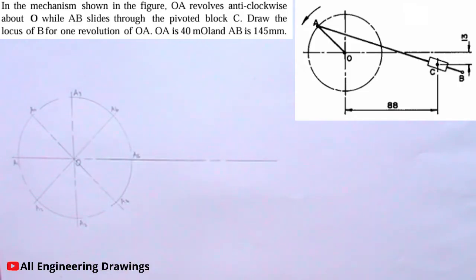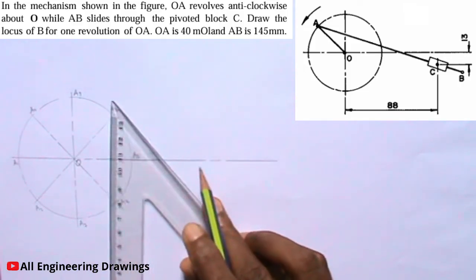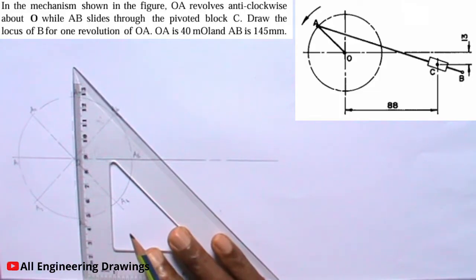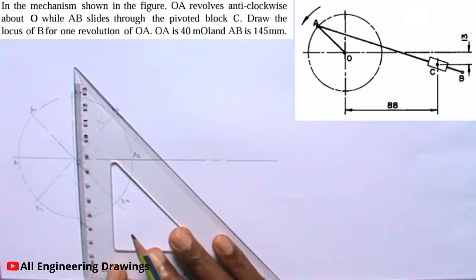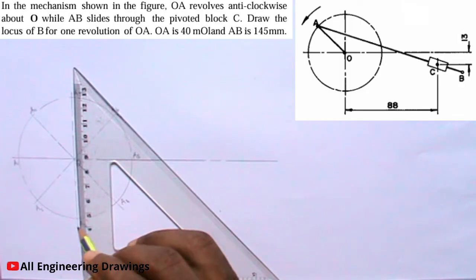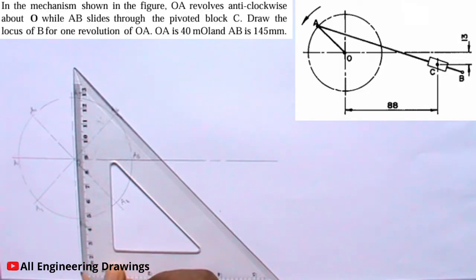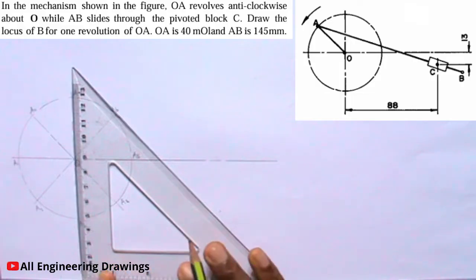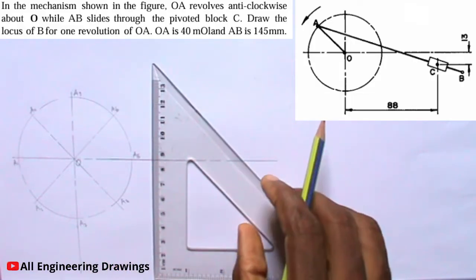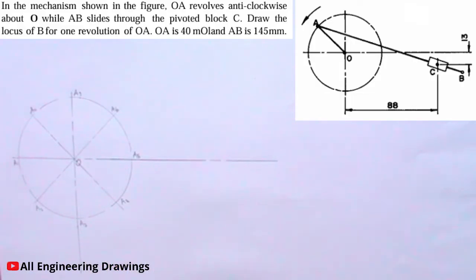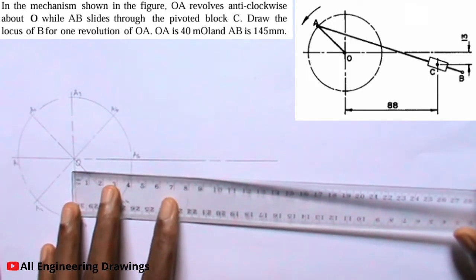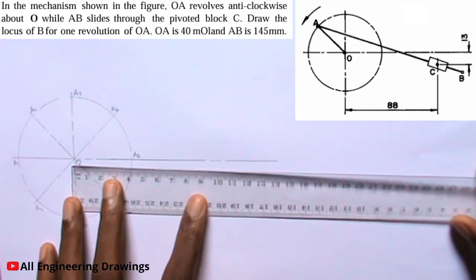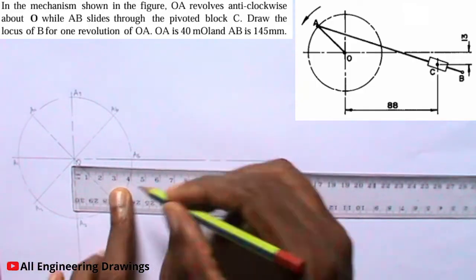Now I will extend this vertical line downward. I will draw another vertical line 88mm from this vertical line. So I will mark a point 88mm from this vertical line here.